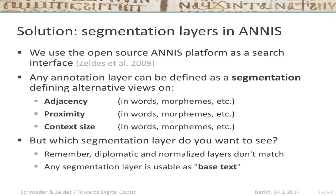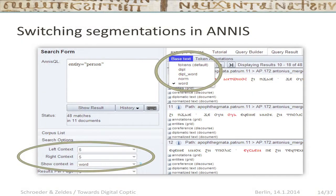Another important distinction is that it's not just what you're searching for in terms of adjacency or proximity, but also what you want to see — these don't necessarily need to go together. You could have a query looking for the next normalized word, but want it displayed in diplomatic characters. To make it concrete: in our interface, there are two points where you can switch segmentations. You can change the base text — deciding to see whole words — and you can set the left and right context in units of word, morpheme, or something else.